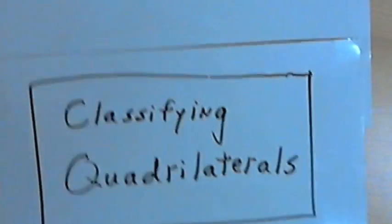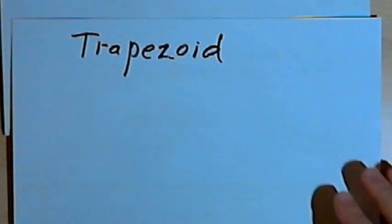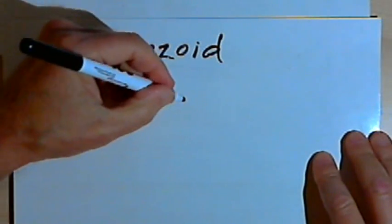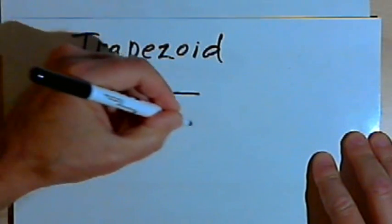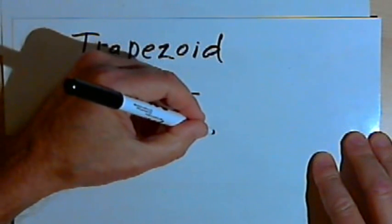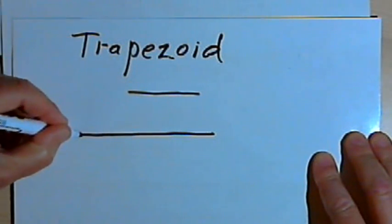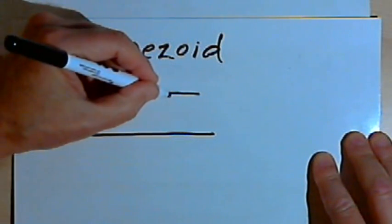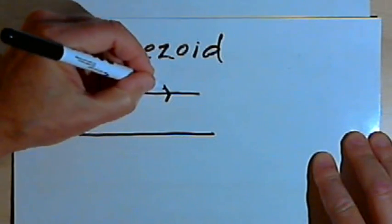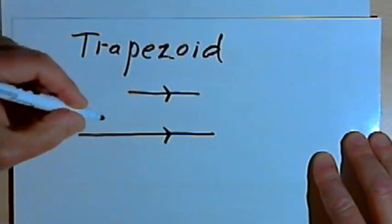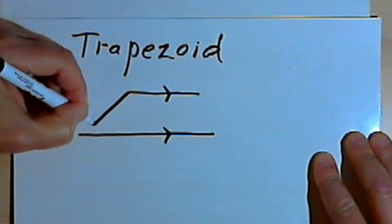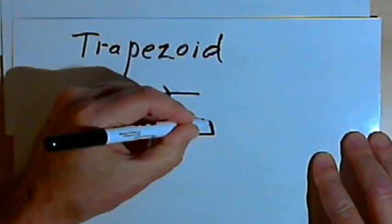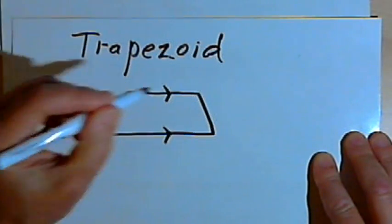Let's start with the trapezoid. A trapezoid is a quadrilateral, so it's a four-sided figure, and the only requirement for a trapezoid is that two of the sides have to be parallel to each other. Those two sides very often are called the bases.